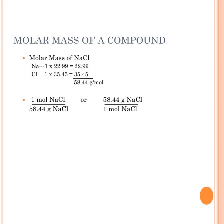For NaCl: one sodium (22.99) and one chlorine (35.45). Adding those extended values gives 58.44 grams per mole. Written as one mole of sodium chloride over 58.44 grams, or 58.44 grams of sodium chloride over one mole of sodium chloride.